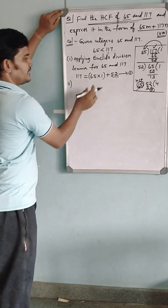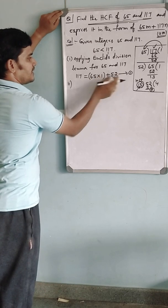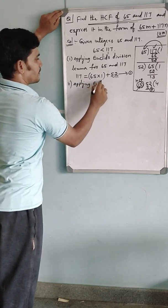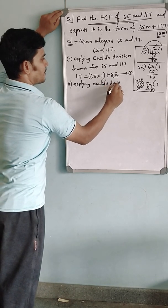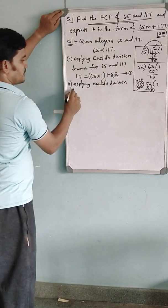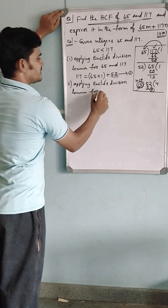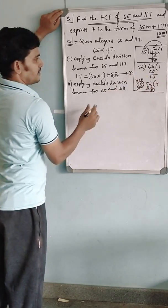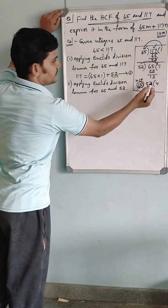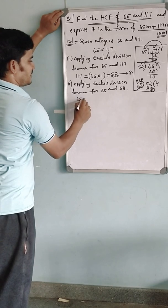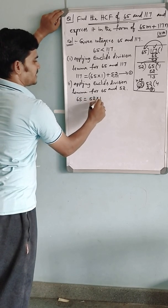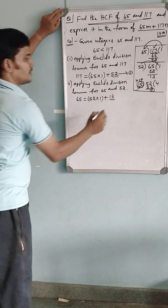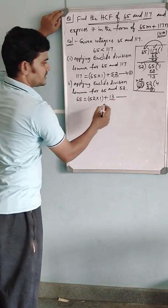Again you apply Euclid's division lemma for the divisor and remainder — that is for 65 and 52. 65 can be written as 52 into 1 plus remainder 13. Since we have not arrived at remainder 0, you have to go further to the third step.